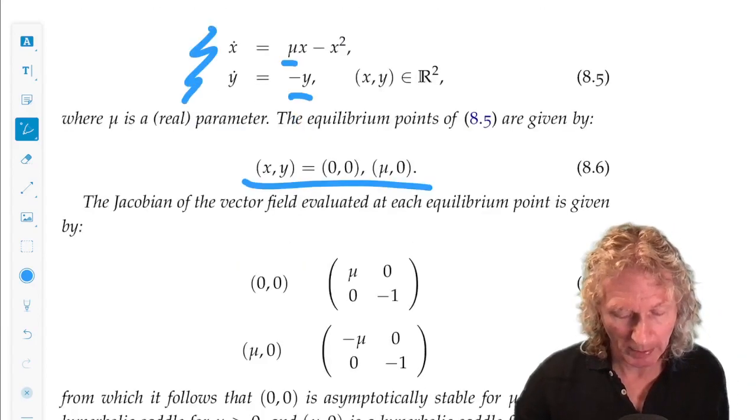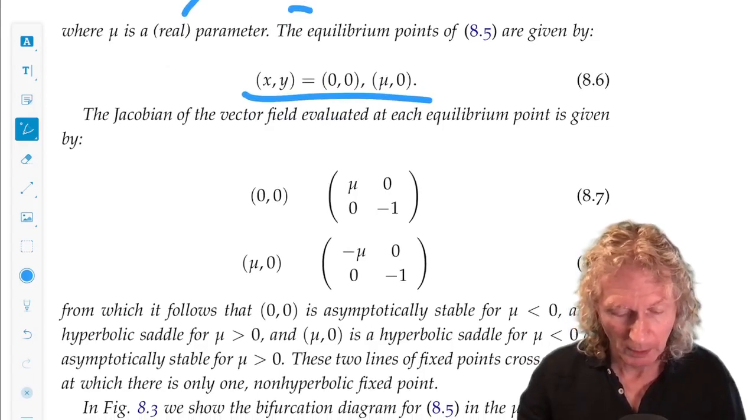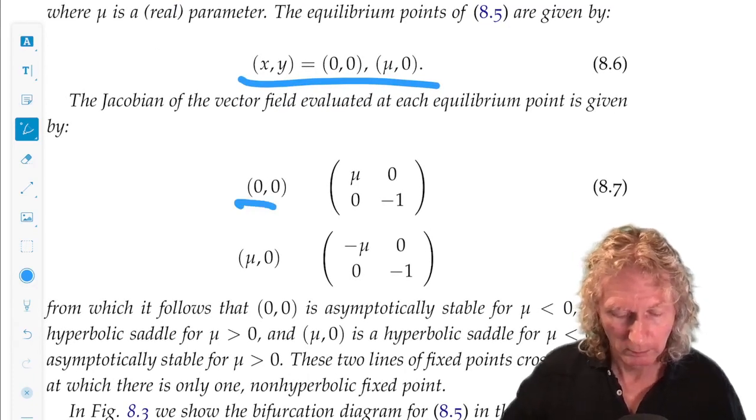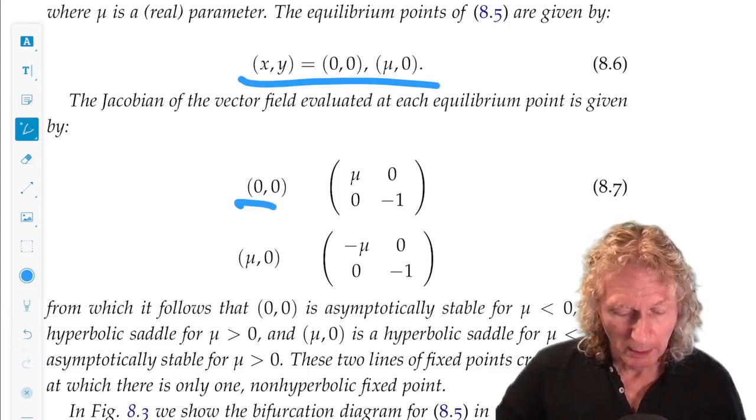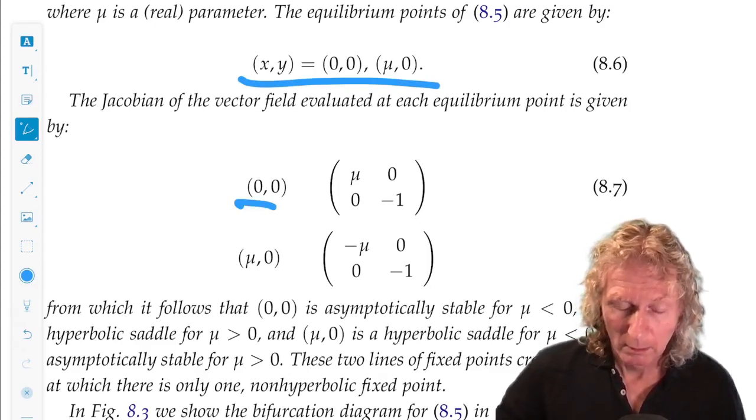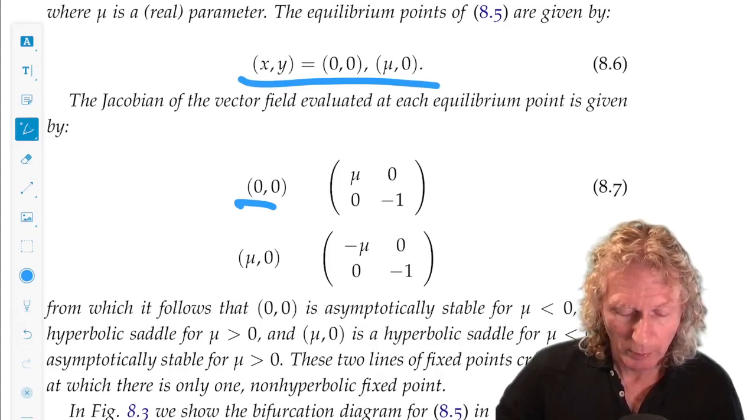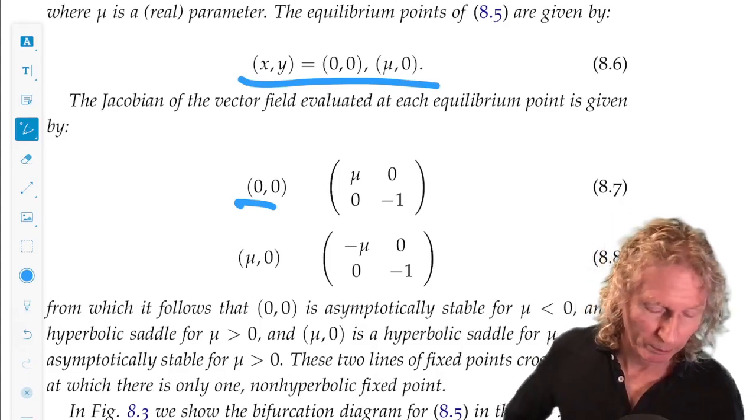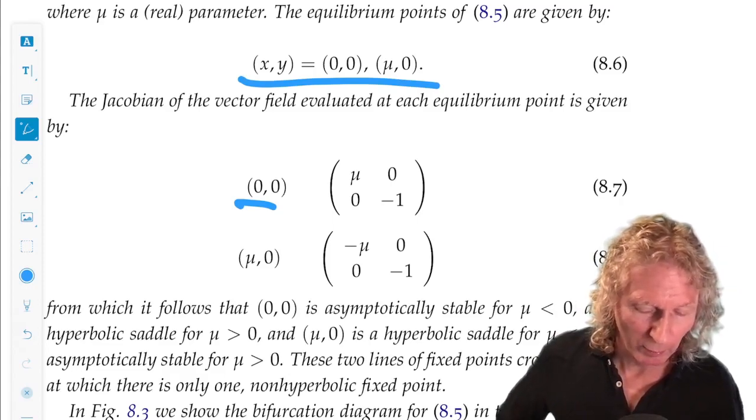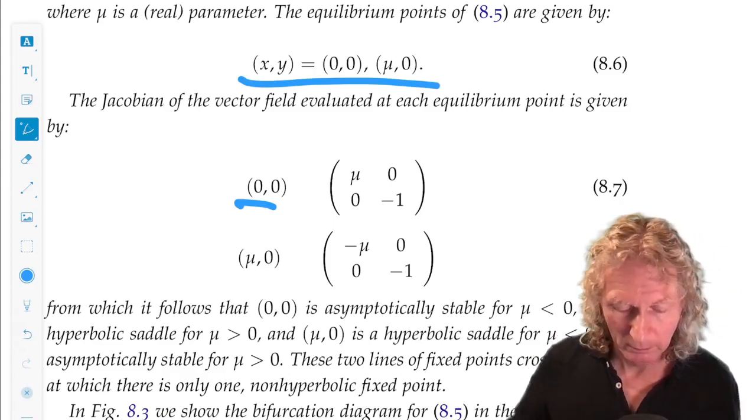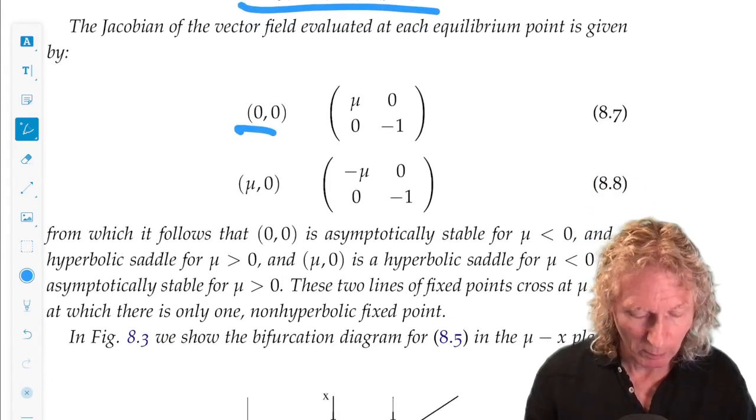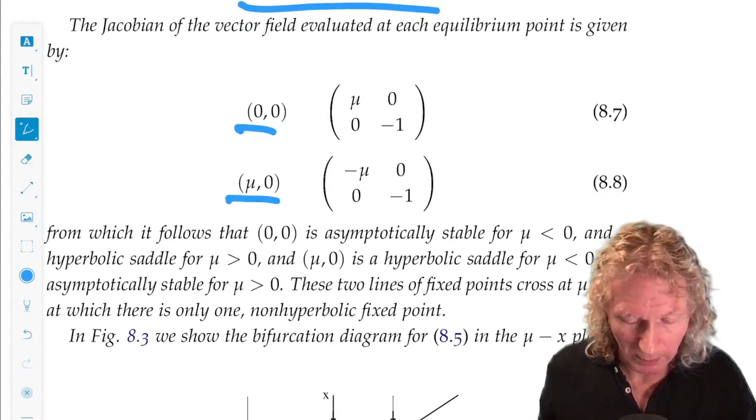So we can linearize about these, and what we see, that (0,0) is stable for mu less than 0, unstable for mu greater than 0, a sink for mu less than 0, a saddle for mu greater than 0.